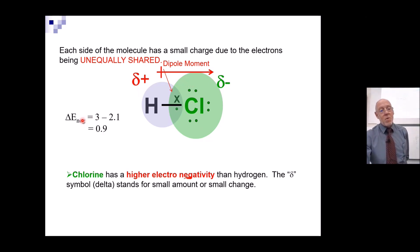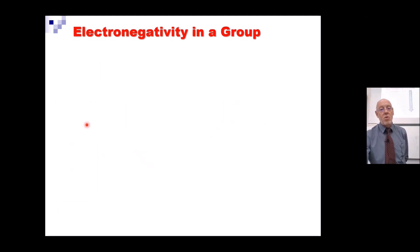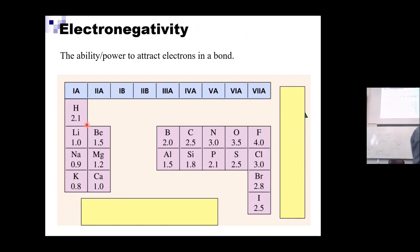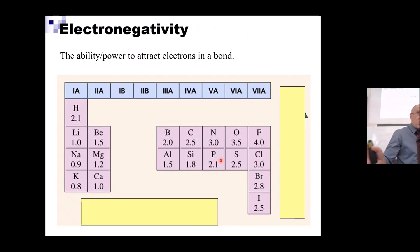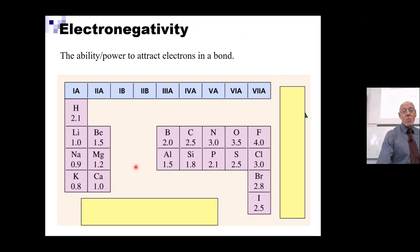Now here's electronegativity — the power of an atom to attract its electrons. All of science comes down to numbers, and there are people who have worked out numbers related to electronegativity. The number we use comes from the Pauling electronegativity scale — for example, hydrogen is 2.1 and chlorine is 3.0. Electronegativity increases as you go up the periodic table and from left to right.